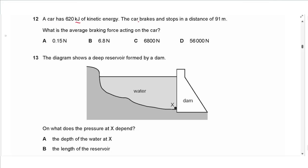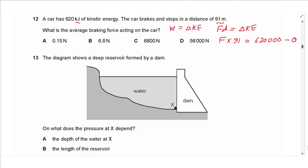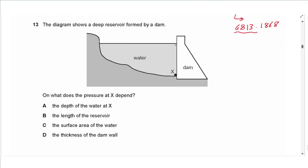Question 12: a car has 620 kJ of kinetic energy and brakes to a stop over 91 meters. Work done equals the change in kinetic energy, so force times distance equals 620 kJ minus zero. Dividing 620,000 J by 91 m gives approximately 6800 N, which is answer C.